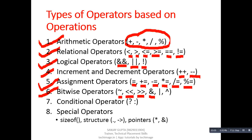Moving on to the next type, which is conditional operator. Here, we have two symbols: question mark and colon. This operator is also known as ternary operator.